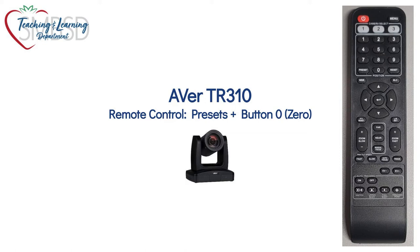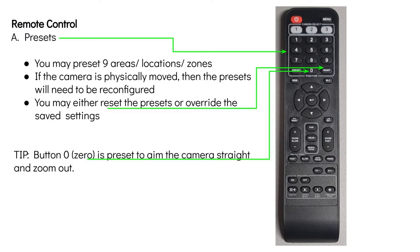This video will review presets and button 0 for the Aver 3R10 camera. There are nine preset buttons on the number pad that you may save. A preset is a location that you determine and the camera pans, tilts, and zooms back to that position. You may choose, for example, a whiteboard, a teacher desk, teaching station, or a small group area as a preset. Instead of using the manual tilt, pan, and zoom buttons, you can press a corresponding number on the number pad and your camera will automatically go back to that desired preset position.